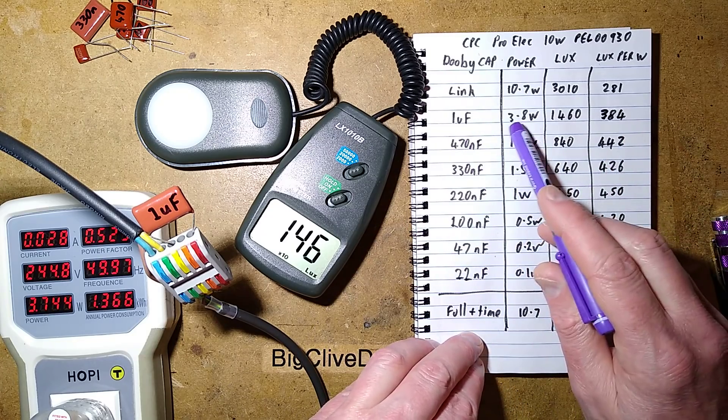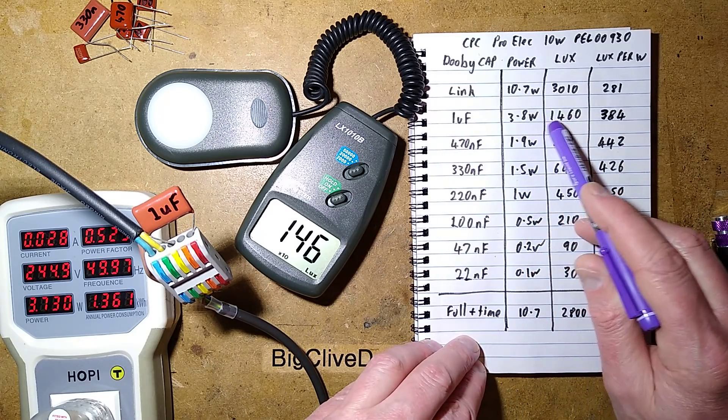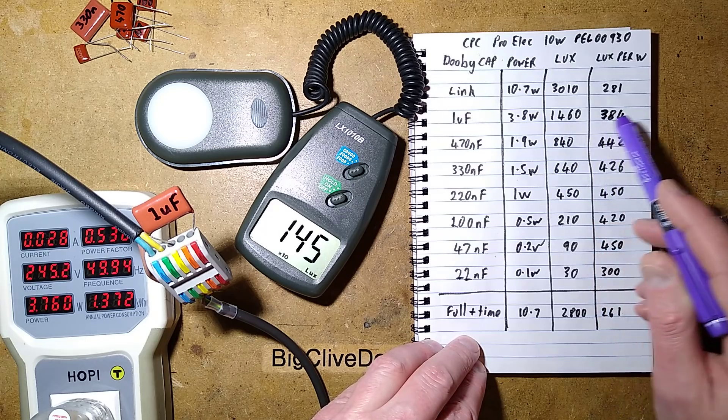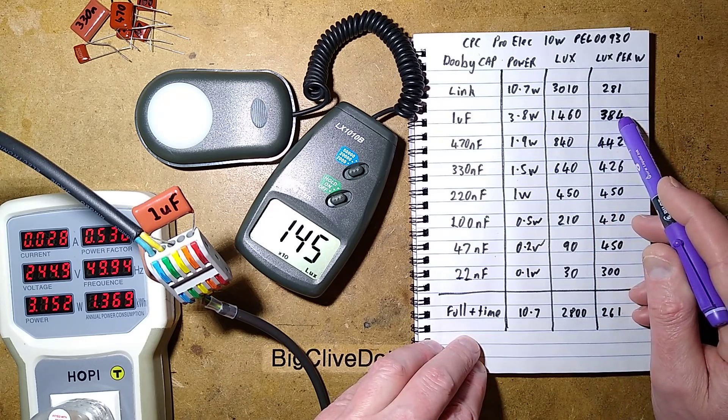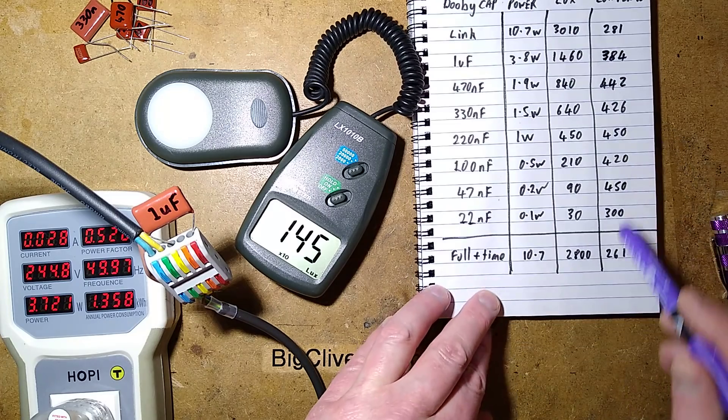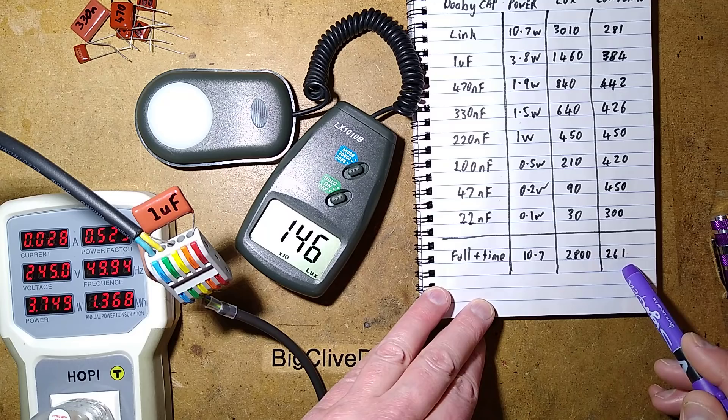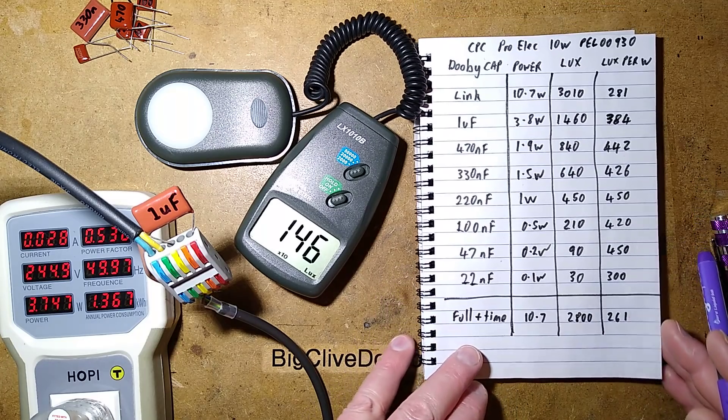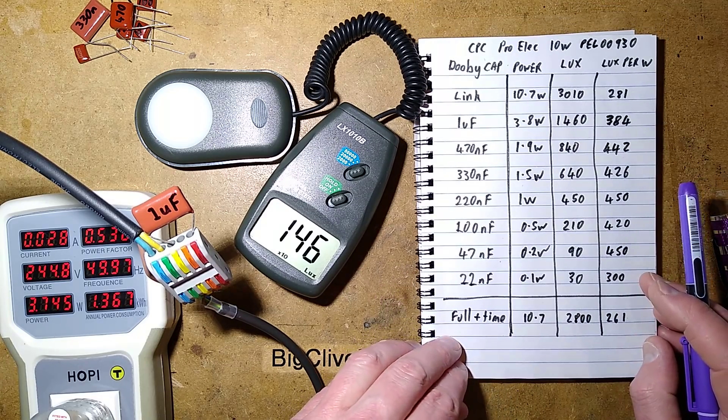But the 1 microfarad gave 3.8 watts, 1,460 lux, which equates to about 384 lux per watt. So, it's actually a significant increase in efficiency, definitely, versus when it was actually getting hot and had gone to 261 lux per watt, if that's a useful measurement.